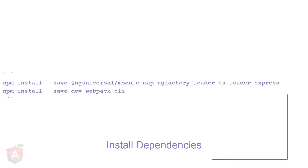Next, you do your npm installs. It's important to note that the ng-universal-map-module-loader — mouthful — is there because when you're doing a Universal application, you're likely interested in easy lazy loading. Yet on the server, lazy loading is a different beast, so you have to deal with it differently, and that's what that save install does for you. TS Loader loads your webpack, Express is your server, and in the most recent versions of webpack, they've debundled the CLI so you can include that on your own as well.